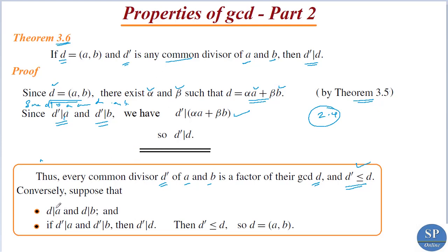Conversely, suppose that d divides a and d divides b. Also suppose that if d-dash divides a and d-dash divides b, then d-dash divides d, which implies d-dash is less than or equal to d. Then we get d-dash is less than or equal to d, and so d equals the greatest common divisor of a and b.